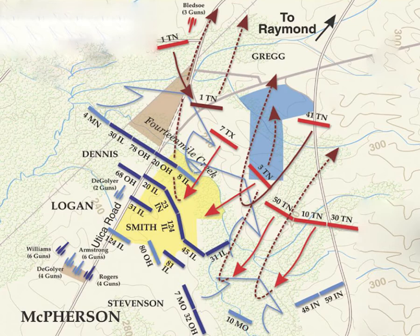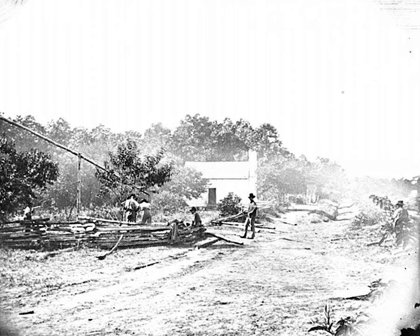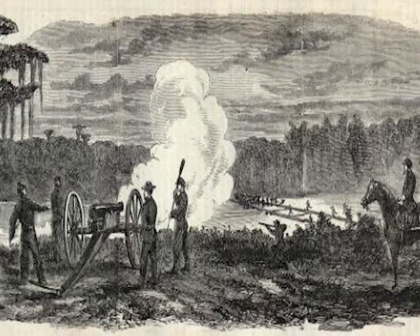Eventually, McPherson began to extend his right flank beyond the Confederate hilltop. The position having been turned and his rearguard reasonably reformed, Gregg ordered a withdrawal through Raymond towards Jackson. Here, the Federal artillery finally made its mark in the battle, pounding the Confederate ranks as Gregg continued the delaying action to allow his battered units to withdraw.